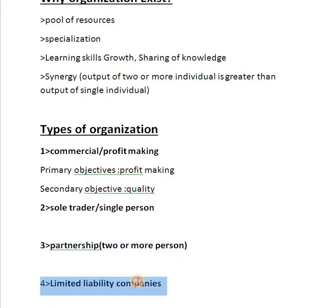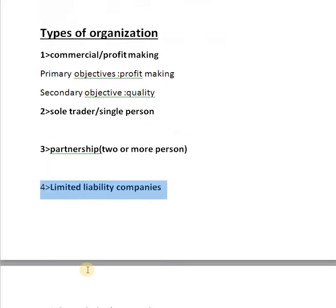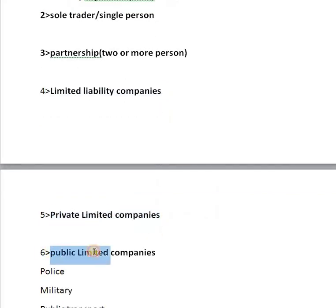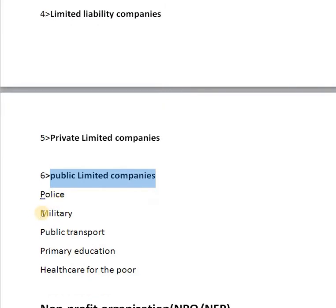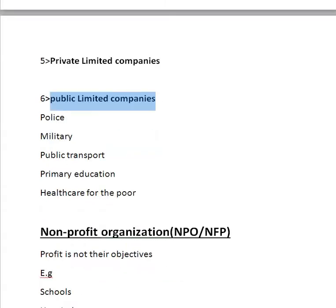Number four is limited liability companies. A company has a separate legal identity from its owners, who are known as shareholders. The owners' liability is limited to the amount they have invested into the company. Private limited companies are denoted by Ltd, while public limited companies are listed on public markets. Public services such as public transport, primary education, and healthcare for the poor also fall under the category of public sector organizations.